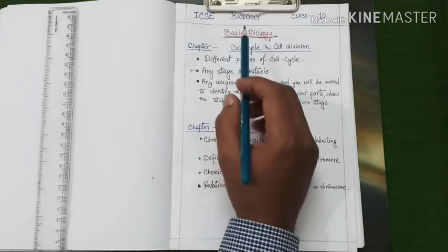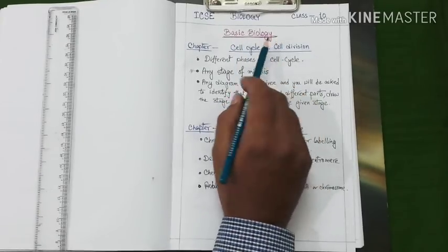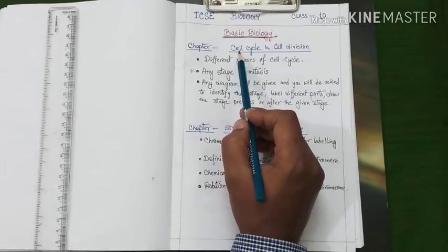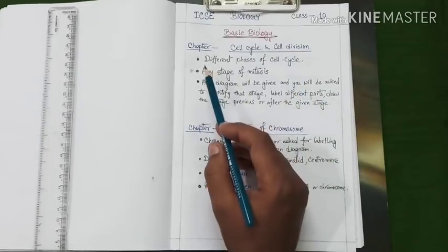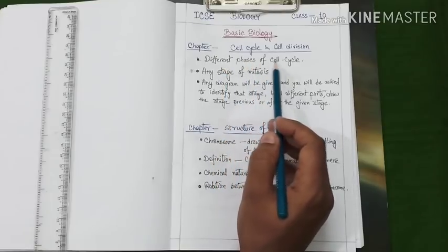Our first unit of class 10 ICSE biology is the basic biology. And under this unit the first chapter is cell cycle and cell division. Let us find out different important topics under this chapter. First, different phases of cell cycle.